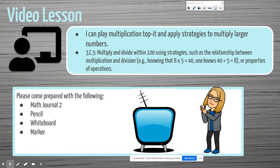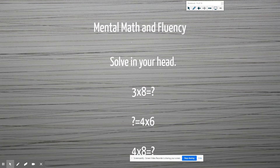I want you to solve these in your head. Three times eight — you should have said 24. Four times six: think about how we can add a group or subtract a group. I would subtract a group, so I'd change the six to five. Four times five is 20, and then add another group of four — that would be 24.